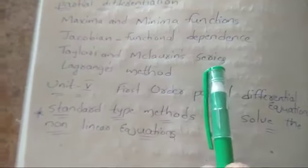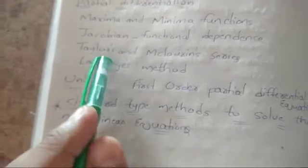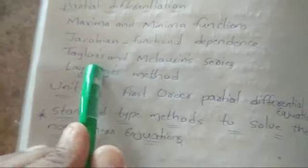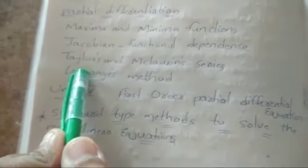Next, Jacobian Functional Dependence. There will be a formula for this method to find the solution. If you're thorough about that formula, you can do any method and any problem regarding this Jacobian. Taylor's and McLaurin series.